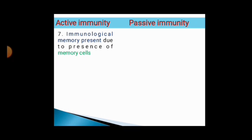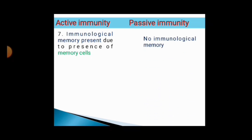Immunological memory is present in active immunity due to the presence of memory cells, whereas in passive immunity there is no immunological memory.